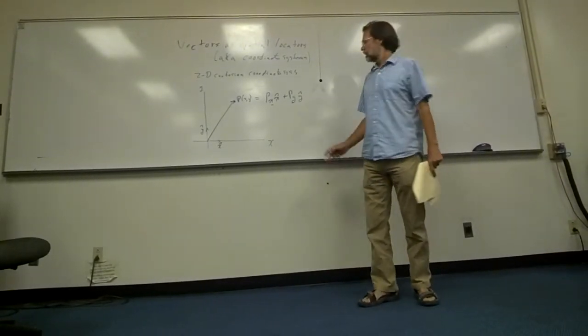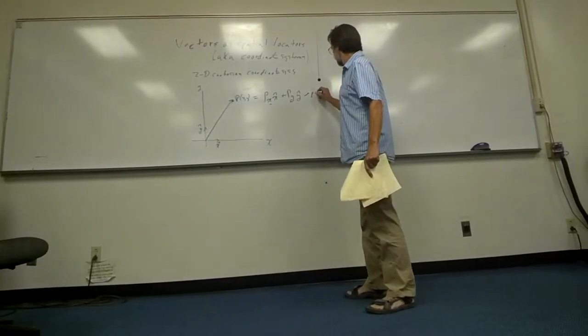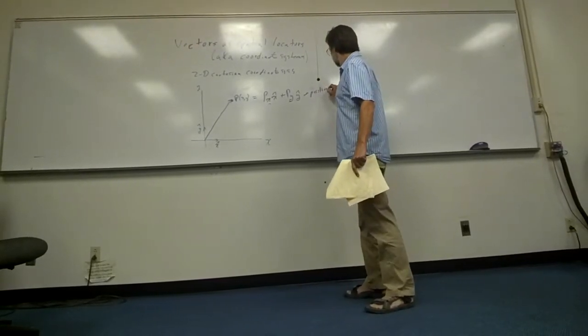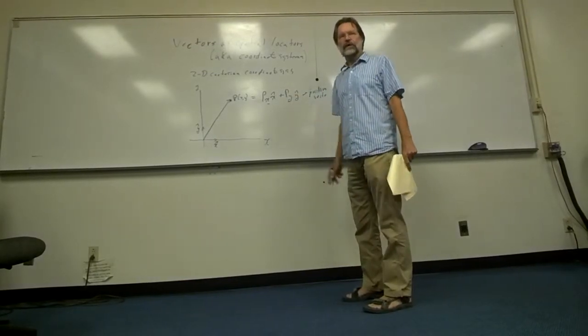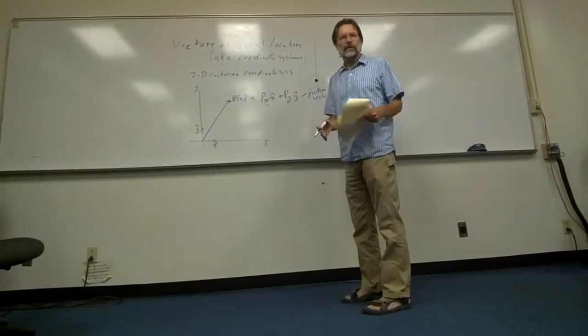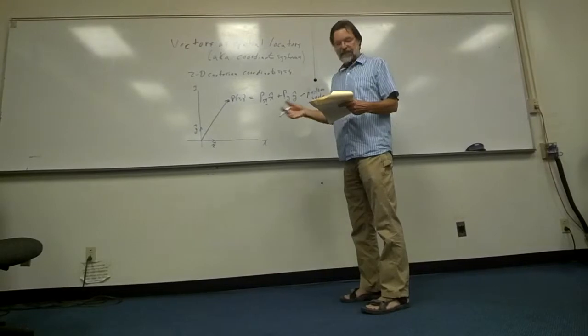There's nothing more than that. So in this case, this is the position vector. And the position vector defines Cartesian space or Cartesian coordinate system. And that's a spatial reference.